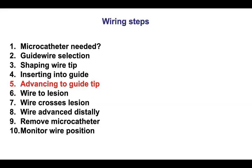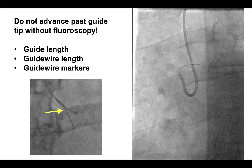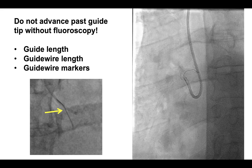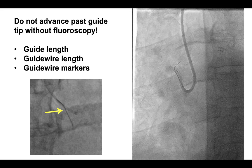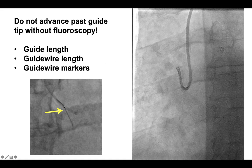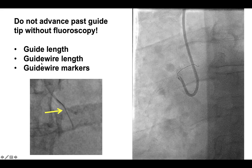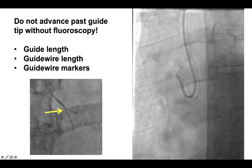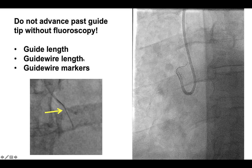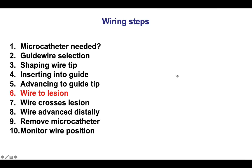Step number five is to advance the wire to the guide tip, done by pushing the guide wire. It is important to know where the tip of the guide is and not push the wire too far — that can be tricky when short guides such as 90 cm guides are being used. Sometimes the wire may go through the side holes if a side hole guide is used. Some wires do have markers that can provide a clue about how far to push. However, one wants to avoid pushing the wire outside the guide catheter without concomitant visualization.